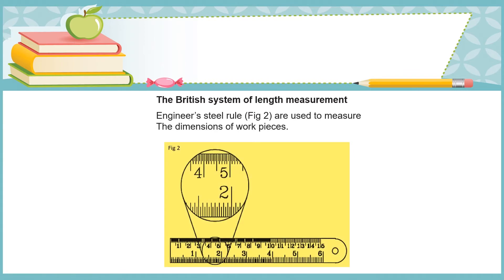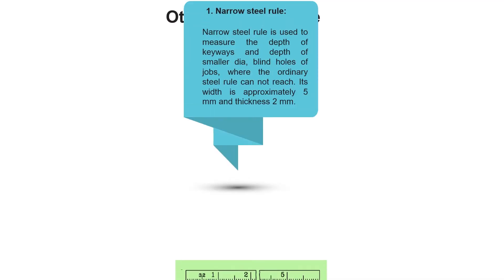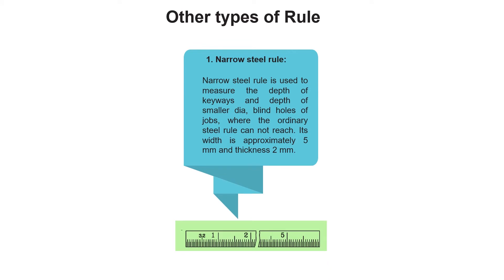Ingenious steel rules are used to measure the dimensions of work pieces. Another type is the narrow steel rule, which is used to measure the depth of keyways and the depth of smaller diameter blind holes of jobs where the ordinary steel rule cannot reach.